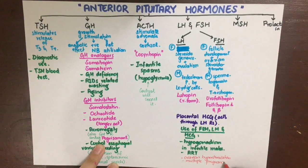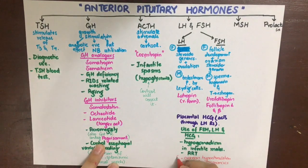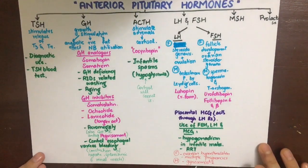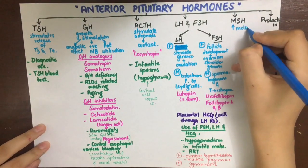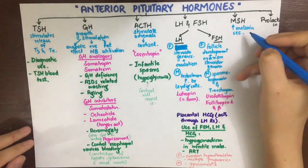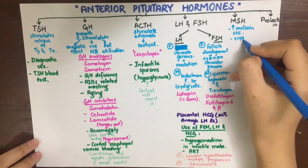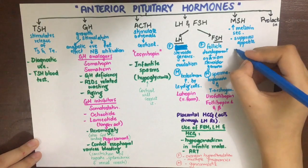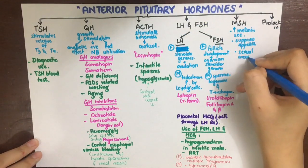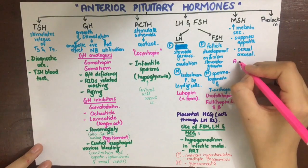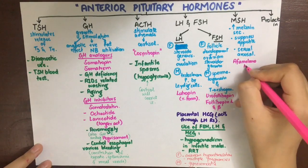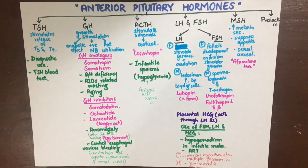The next hormone is melanocyte stimulating hormone (MSH), which increases the secretion of melanin in skin and hair. It also suppresses appetite due to its hypothalamic action and is responsible for sexual arousal. The drug form of MSH is known as afamelanotide, and its use is not very common yet — it is being tested in clinical trials for various skin conditions and for tanning.